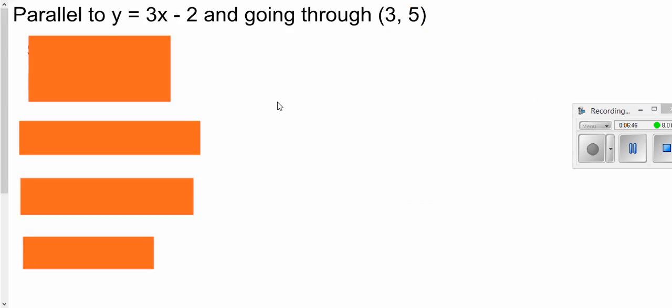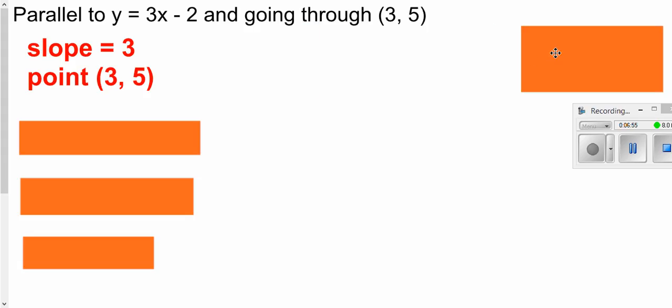Similarly, when you're dealing with parallel you need to get y on one side by itself. In this case it is. And hopefully you remember that with parallel lines the slopes of parallel lines are the same. So our slope is 3. We have our point. Use our point-slope formula.